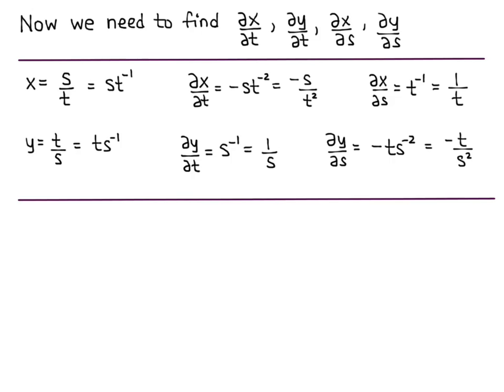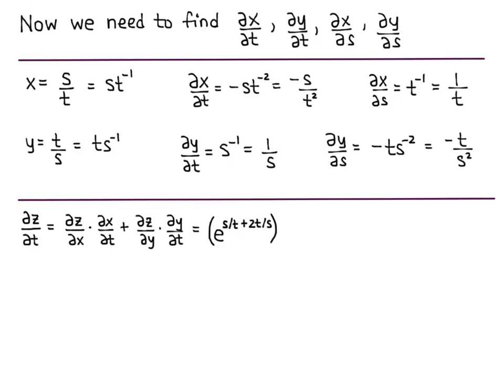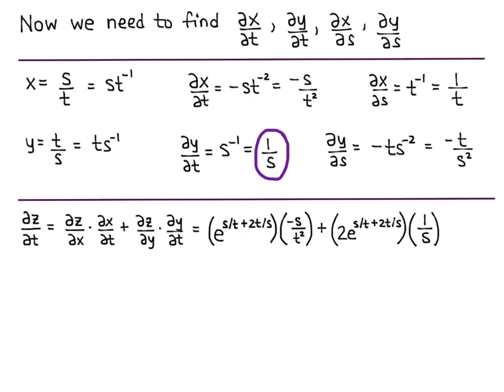Now we put it all together using the chain rule. Partial z partial t equals partial z partial x times partial x partial t plus partial z partial y times partial y partial t. So, this gives us e to the s over t plus 2t over s times negative s over t squared, plus 2e to the s over t plus 2t over s times 1 over s. That's our partial z partial t.